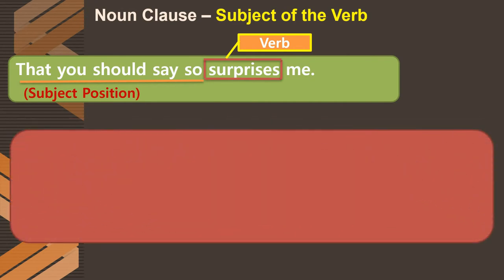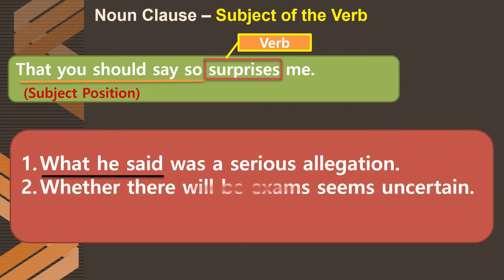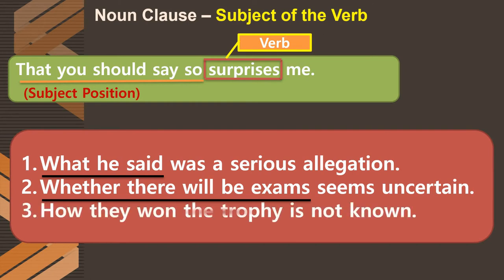Examples of noun clauses as subject of the verb: First, 'What he said was a serious allegation' — 'what he said' is subject of the verb 'was.' Second, 'Whether there will be exams seems uncertain' — 'whether there will be exams' is subject of the verb 'seems.' Third, 'How they won the trophy is not known' — 'how they won the trophy' is subject of the verb 'is' in the main clause.